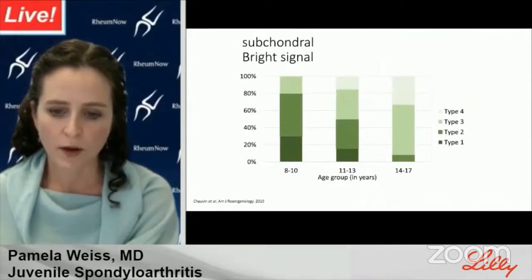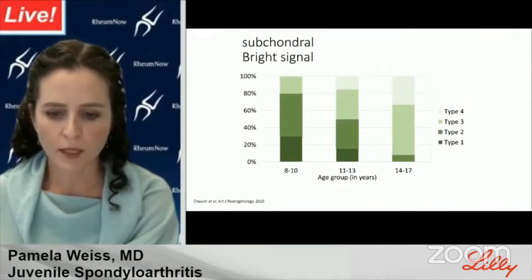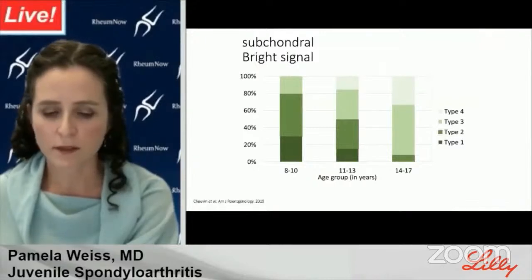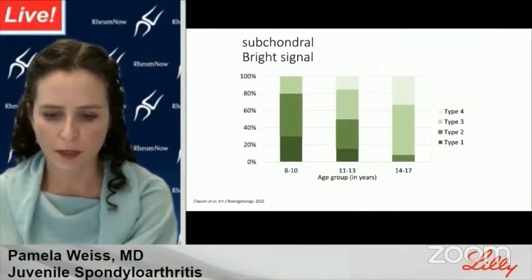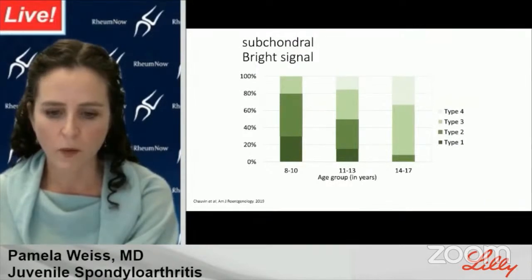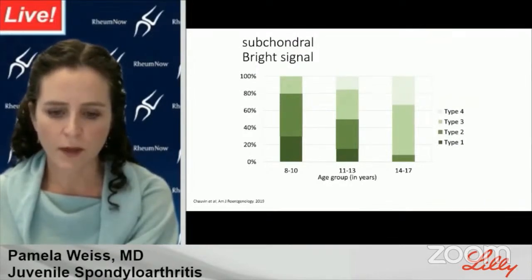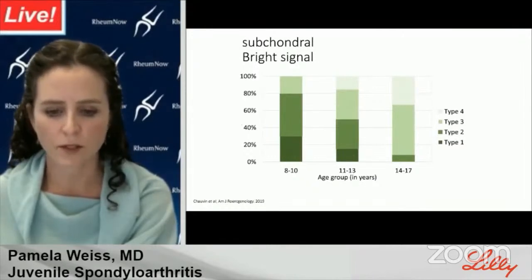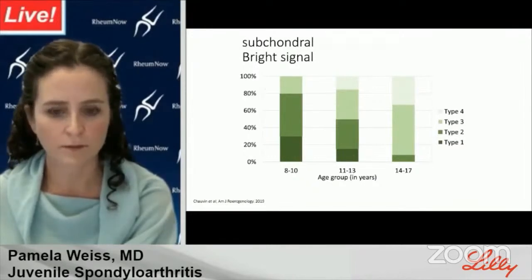Types 1, 2, and 3 are present in the majority of pre-pubertal children; by the time they approach skeletal maturity, type 1 signal disappears and type 2 signal is present in less than 10 percent. When stratified by sex, females seem to start out with more type 1 signal but progress to type 4 signal faster. Rheumatology providers should know about these changes and be aware that normal signal can be mistaken for inflammatory change by those not used to viewing pediatric studies.